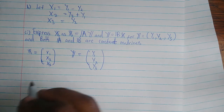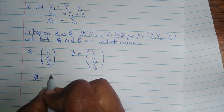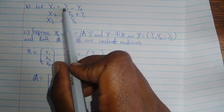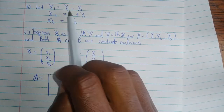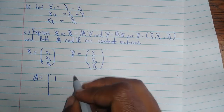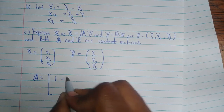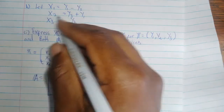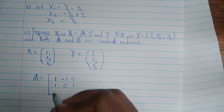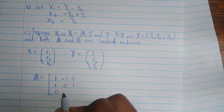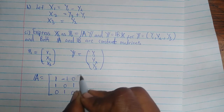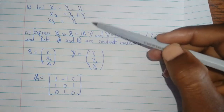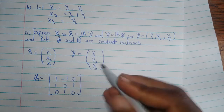So our matrix A — we are taking the coefficients of y. The first row gives us y1 coefficient 1, y2 coefficient negative 1, y3 coefficient 0. The second row gives us 0, 1, 0. From the last row we get 0, 1, 0. So these are linear combinations, and we are taking the coefficients of y to form matrix A.